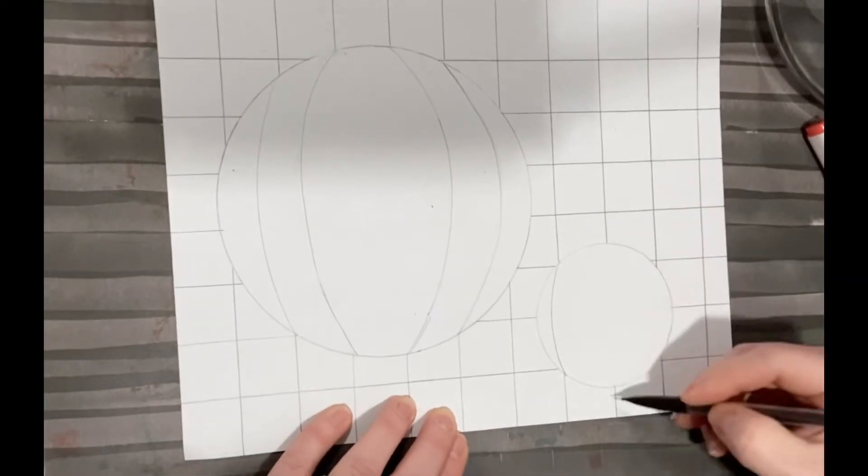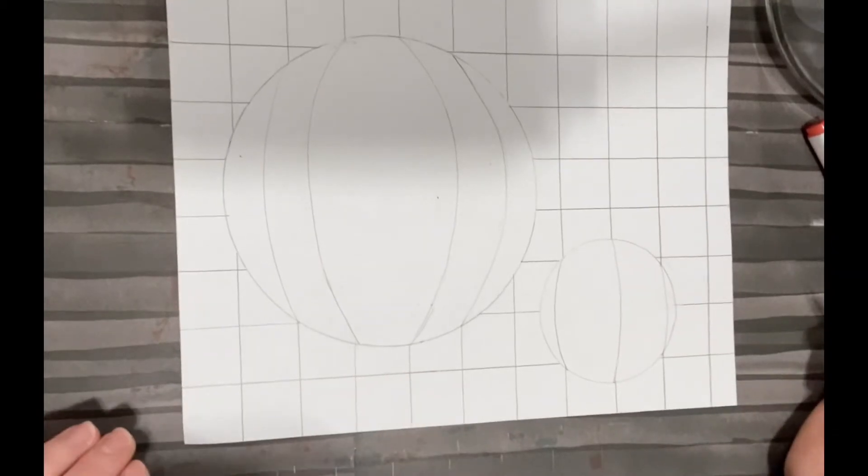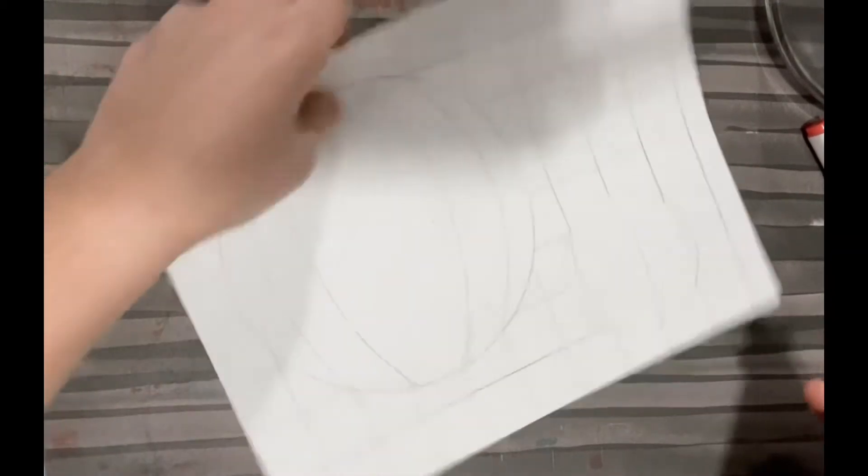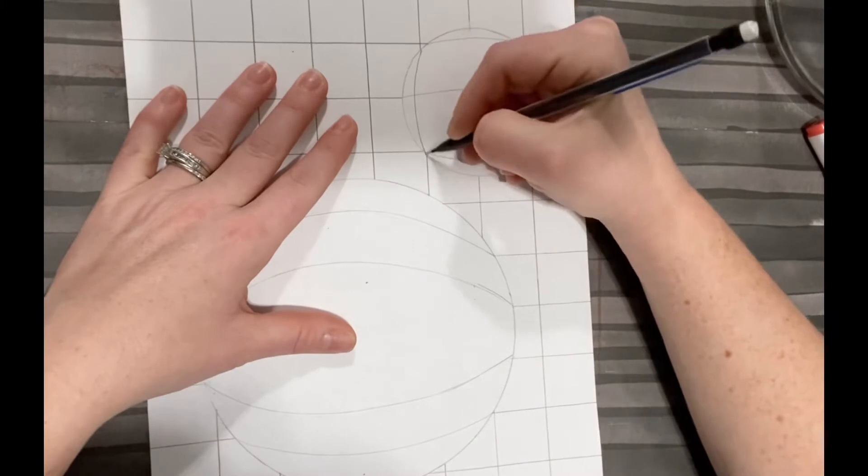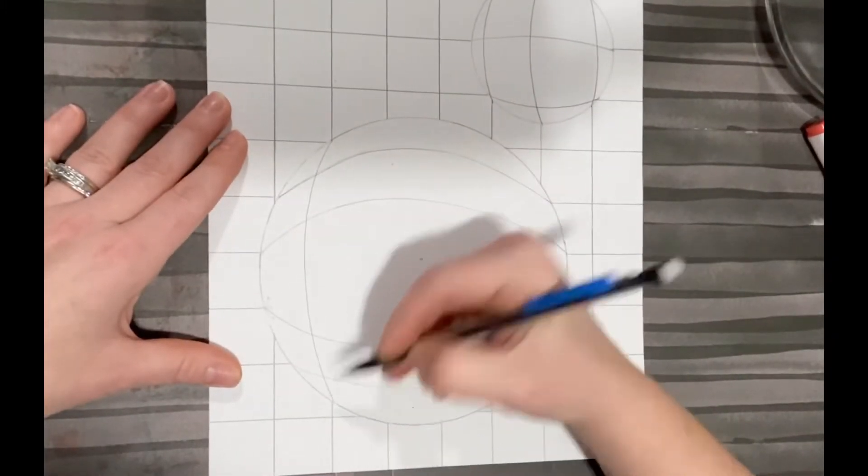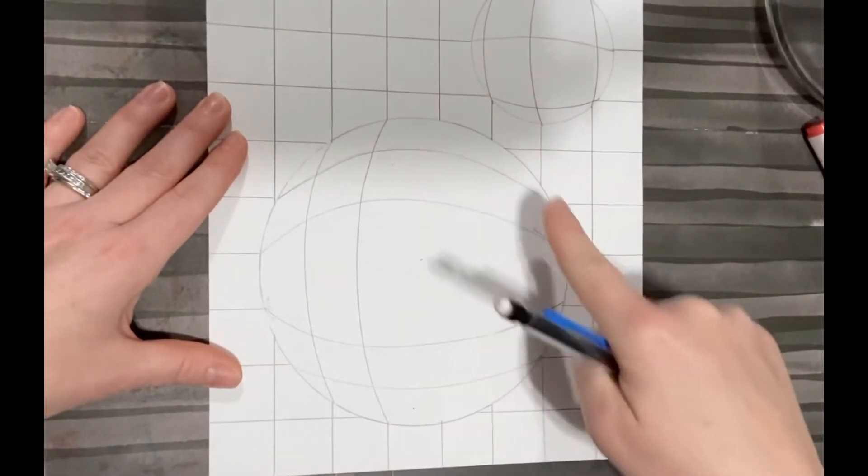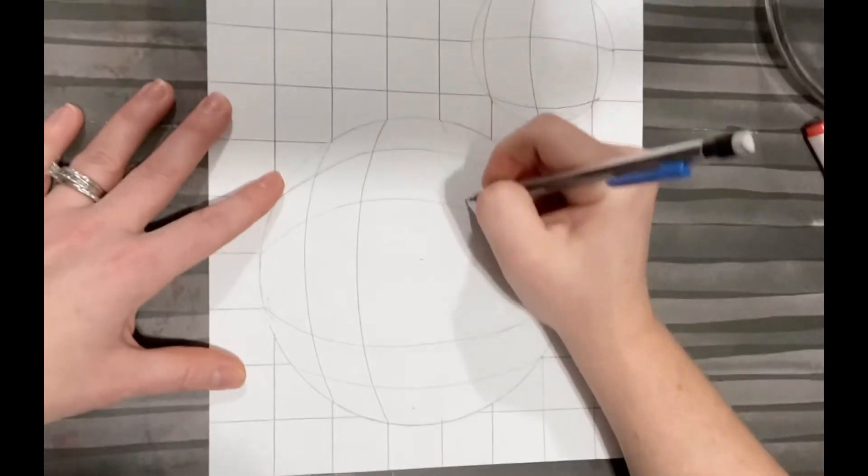Do the same thing with any additional circles you might have, and then rotate your paper and follow these same steps going in the opposite direction. It might help to draw an imaginary line down the middle of your circle and bend the lines on the left side towards the left and the lines on the right side towards the right.